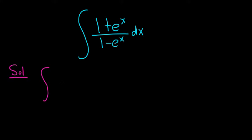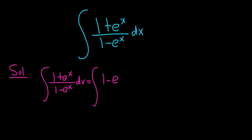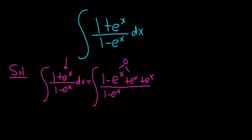Let's do this using a clever trick. So we have the indefinite integral of (1 + eˣ) / (1 − eˣ) dx. It would be really nice if it was (1 − eˣ) / (1 − eˣ) because that cancels. So what we do is write down what we want: (1 − eˣ) / (1 − eˣ). But we can't just put a −eˣ there — we have to take it away, so we add eˣ back. We're inserting a −eˣ and an eˣ in a clever way.